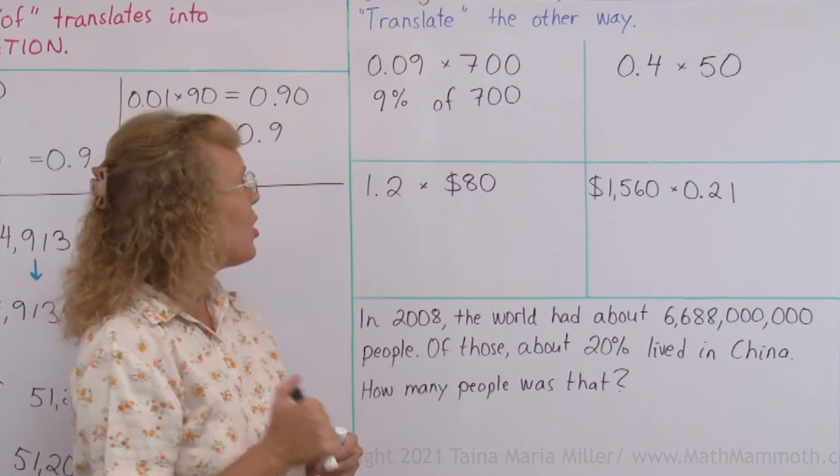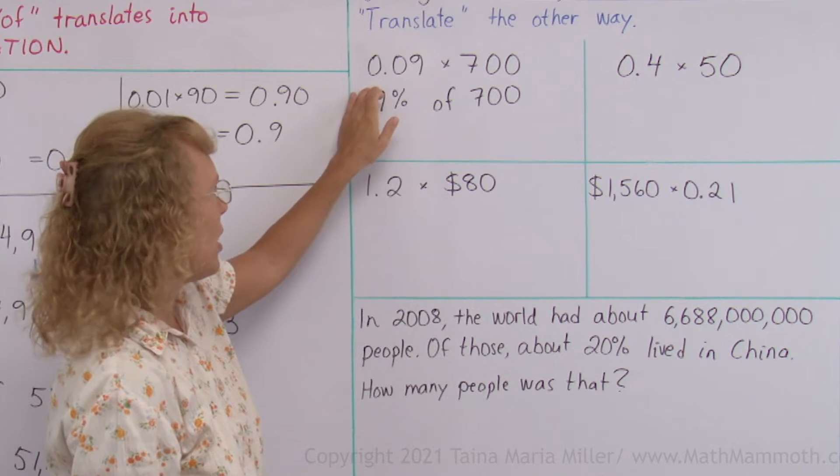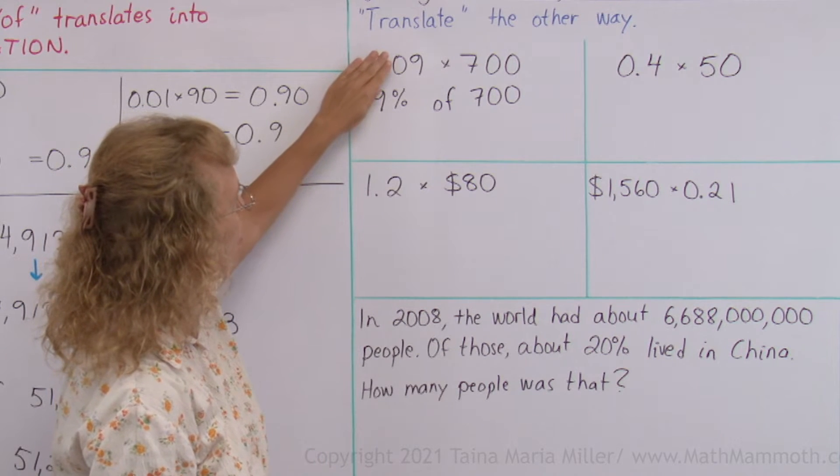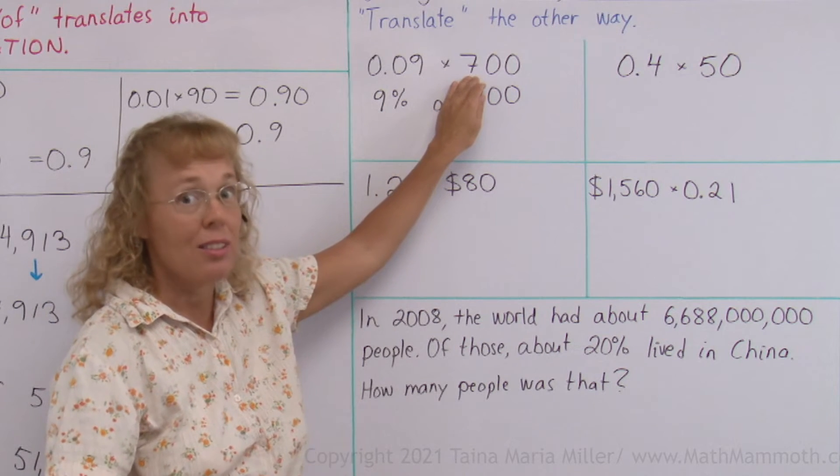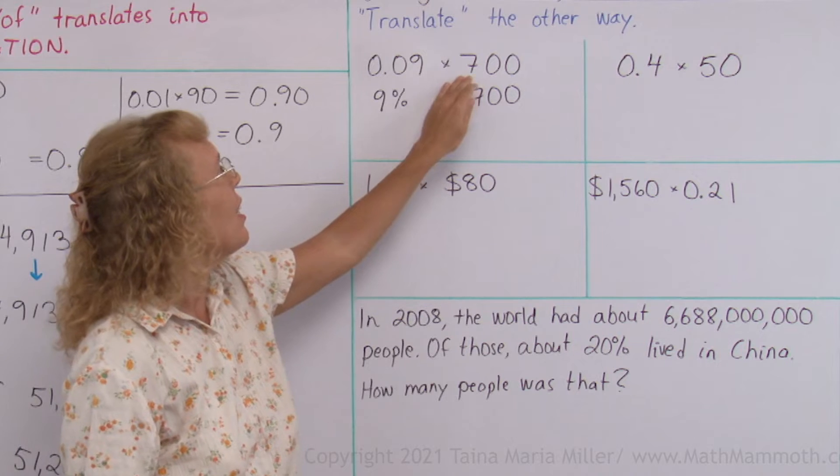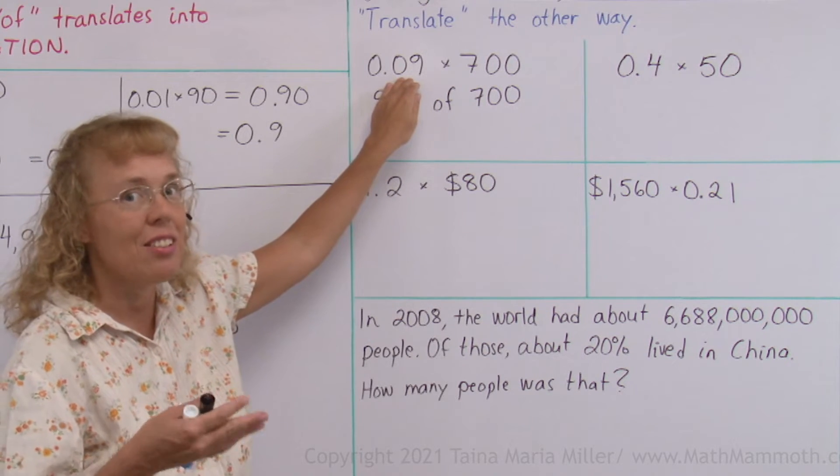Now to calculate it, you could use decimal multiplication. In which case you would multiply as if there was no point here, you would multiply 9 times 700, 6,300. And then put two decimals into it so you would get 63.